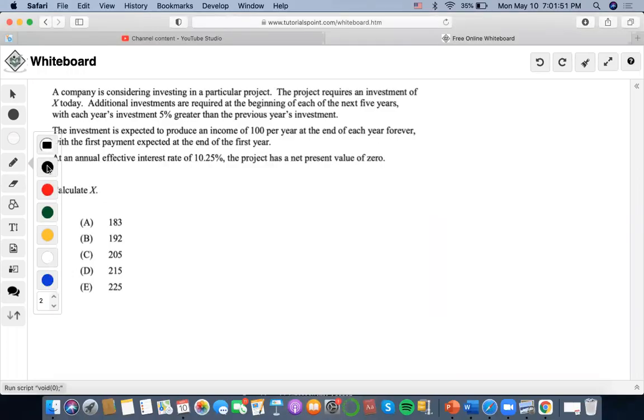First problem is that a company is considering investing in a particular project. The project requires an investment of X today. An additional investment is expected to produce an income of 100 per year at the end of each year forever, with the first payment at the end of the year. Net present value.